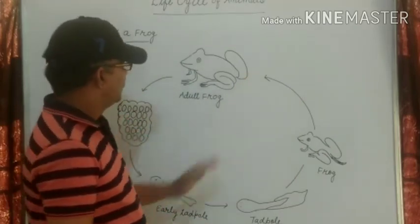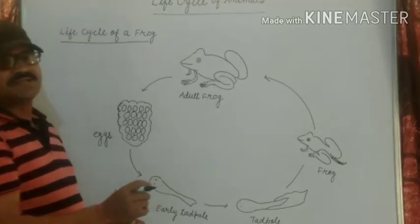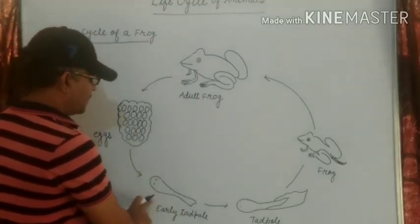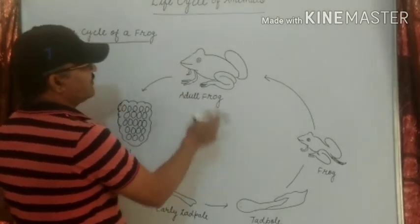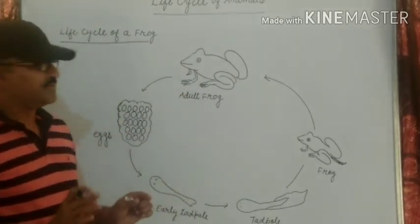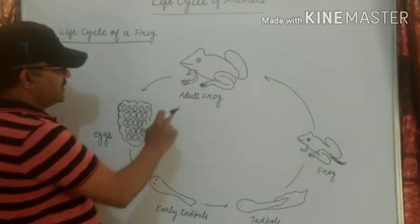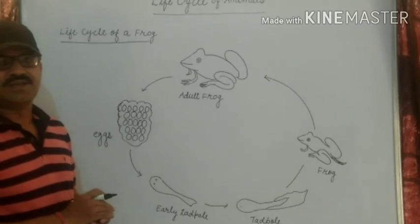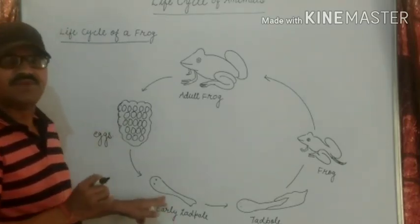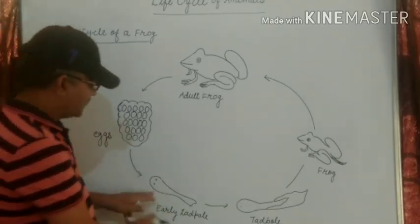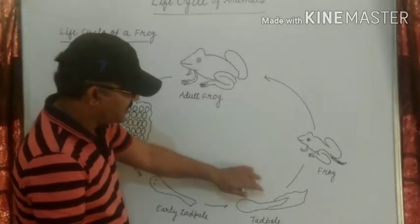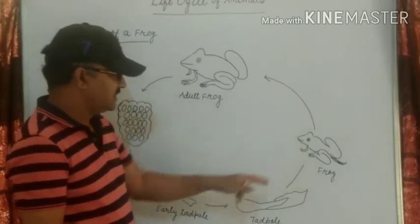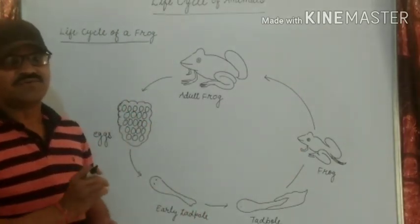This frog converts from a tadpole into a frog. This whole process is known as metamorphosis — the process by which a tadpole converts into a frog. In metamorphosis, each stage is different from the previous one. After development it looks like a frog. This process is known as metamorphosis.